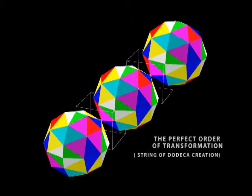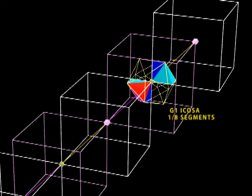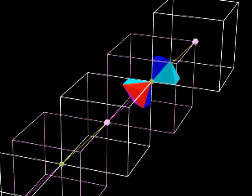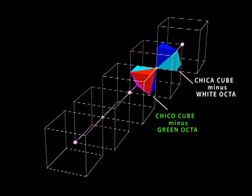So we've shown the dodeca side. Let's have a look at the icosa side now. So what we'll do, we'll start with these two icosa segments. And we'll change them back to the Chico and Chica cubes.